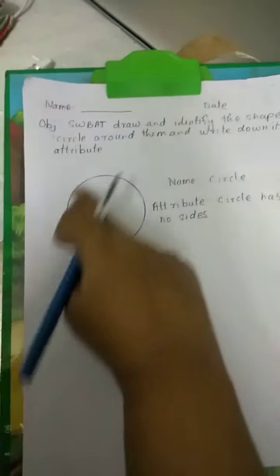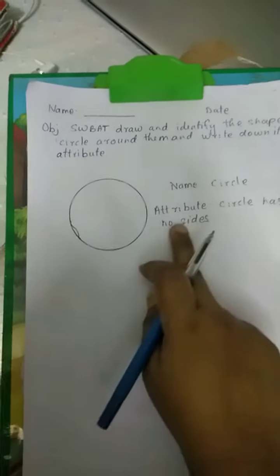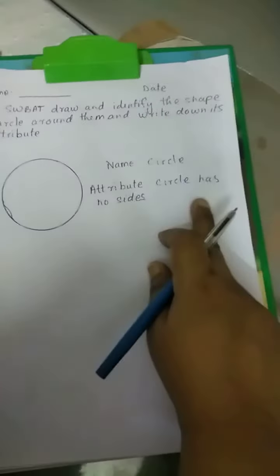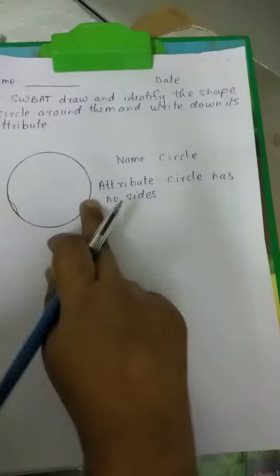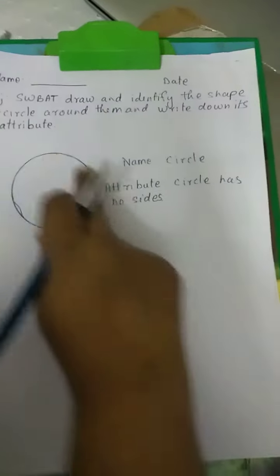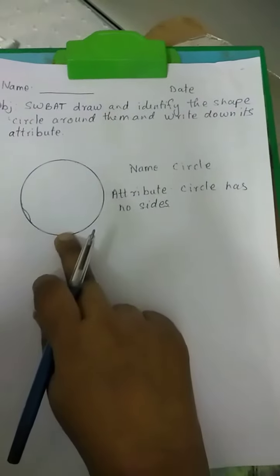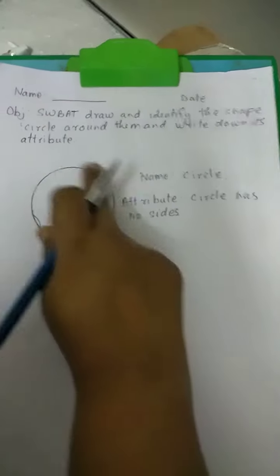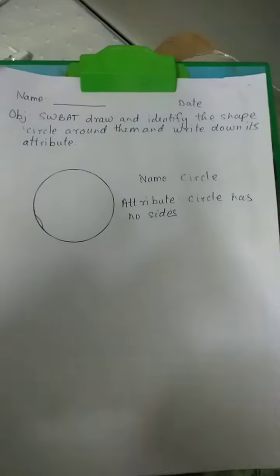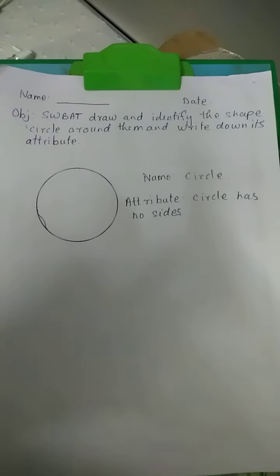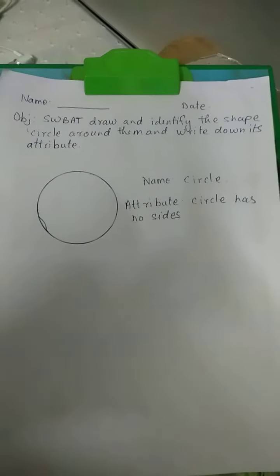Now, what is a circle? Circle means? It has no sides. Okay? Circle has no sides. It has no sides. This is a circle. So, what will we do? We will make a circle.